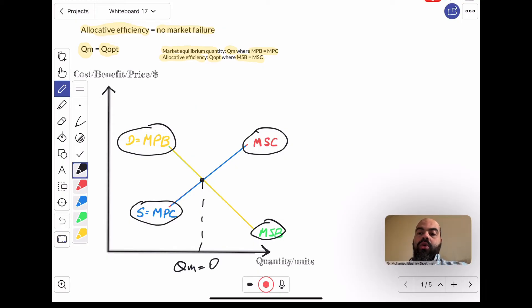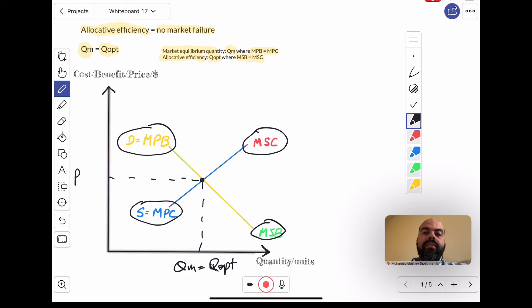The MSC will align with the MPC, the MPB will align with the MSB, and qm will also equal qopt. The market equilibrium is also the socially efficient equilibrium. This is the case where the market achieves allocative efficiency. Consumer surplus and producer surplus are maximized, and thus community surplus or social surplus is maximized. Before I actually begin the videos about market failure, I want you to wrap your head around this concept of allocative efficiency and the basically absence of market failure.